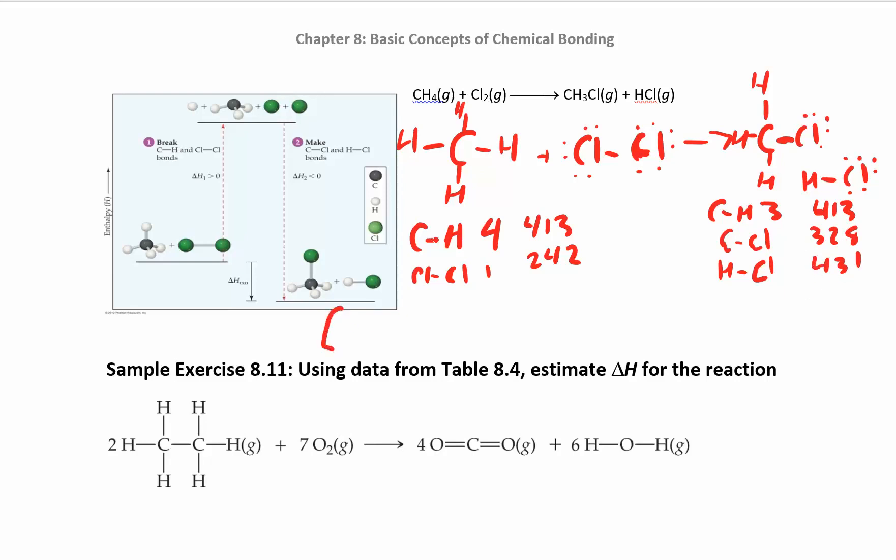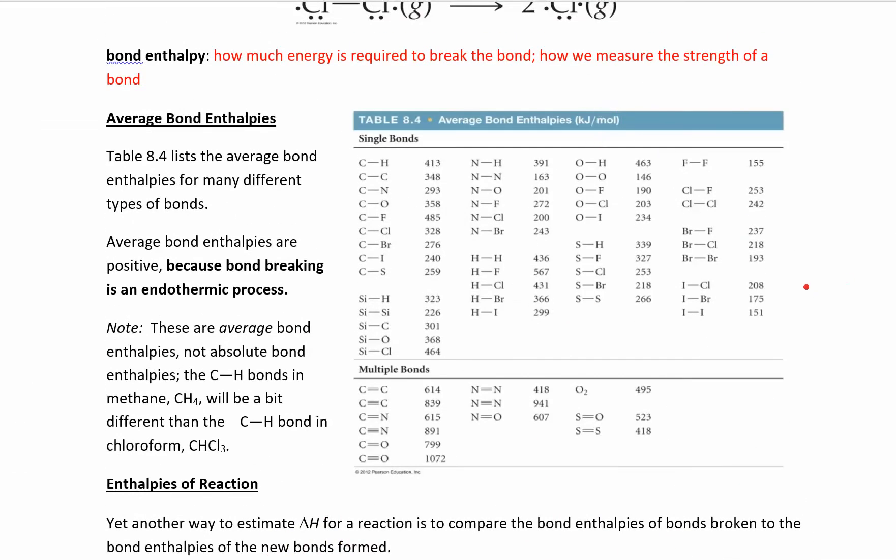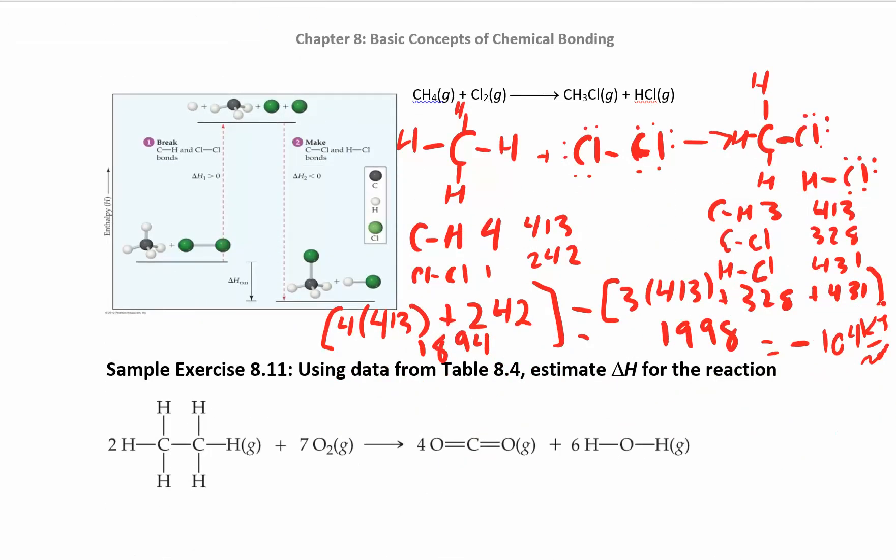Now I'm going to add up all of my reactant bonds. I had four C-H bonds, and each C-H bond was 413 kilojoules per mole. One of these Cl-Cl bonds, which is 242. I'm going to add those up. I get 1894. On the product side, I have three at 413, and a 328 and a 431. When I add all those up, I get 1998. When I do 1894 minus 1998, I end up with negative 104.